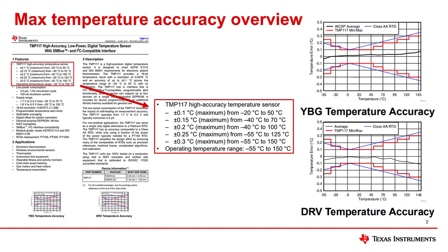Let's look at the first accuracy specification listed of plus or minus 0.1 degrees Celsius from negative 20 to 50 degrees Celsius. This spec means that between negative 20 to 50 degrees Celsius, no TMP117 device should report a temperature value that deviates from the true temperature value by more than plus or minus 0.1 degrees Celsius. These maximum temperature accuracies are warranted across the sensor's operating temperature range, here shown to be negative 55 to 150 degrees Celsius. This range defines the temperatures at which the sensor is rated to operate safely and provide accurate measurements.